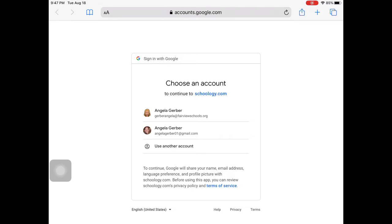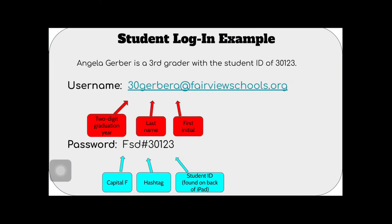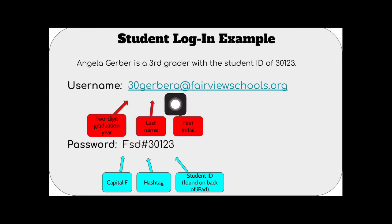It may recognize your Google account if you've already signed in to Google Meet or any other Google app. If it does not, here is what your Google login would be. As an example, say I'm a third grader named Angela Gerber with student ID 30123. The username starts with the two-digit graduation year, then last name, first initial, at fairviewschools.org.